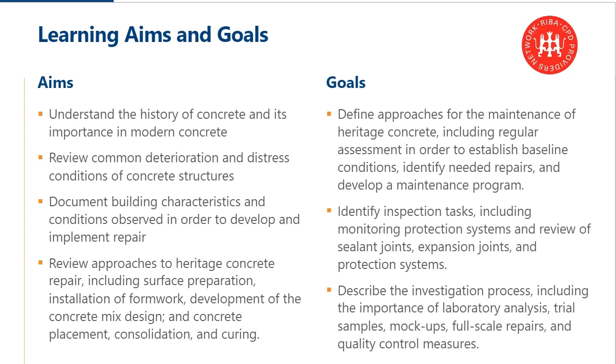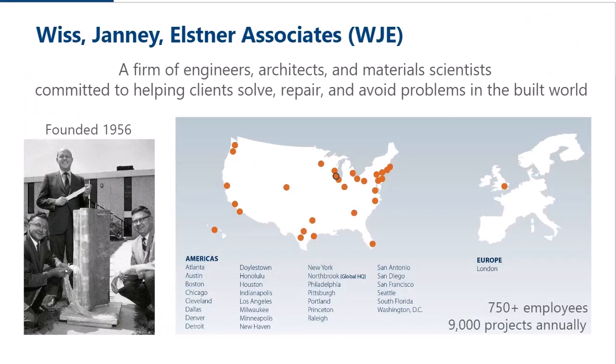Before we begin, I want to give a very brief introduction to WJE, Wiss Janney Elstner Associates, to provide some context for the webinar. We're a firm of engineers, architects, and material scientists. Our mission is to help clients solve, repair, and avoid problems in the built world. We focus on assessment, repair, and rehabilitation of existing structures and enclosures, as well as avoiding problems in new structures through design review, design assist, and construction troubleshooting. We were founded in 1956 in Northbrook, Illinois. Today we have 750 or so employees, 29 offices in the United States, and one office in Europe, in London, which we started in 2016.